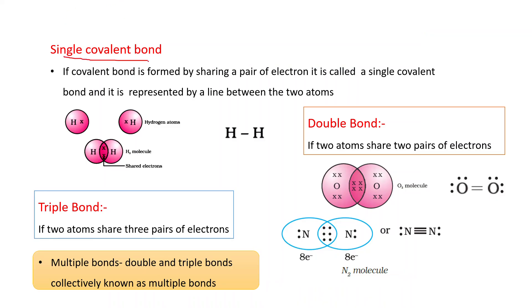Single covalent bond: if a covalent bond is formed by sharing a pair of electrons, it is called a single covalent bond, and it is represented by a line between the two atoms. This is one hydrogen atom, this is another hydrogen atom — each hydrogen atom has one single electron. When these two hydrogen atoms join and share this one electron pair, a single covalent bond is formed, represented by placing a line between these two bonded atoms.